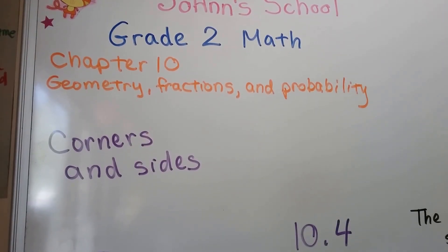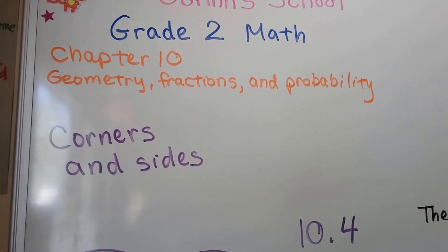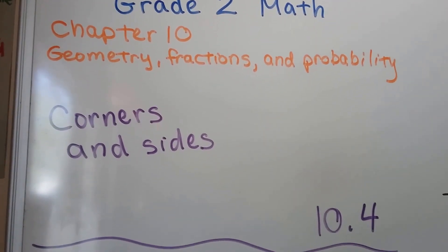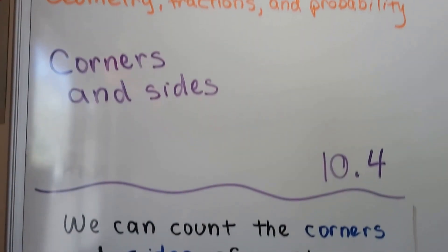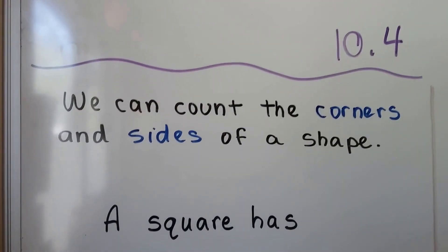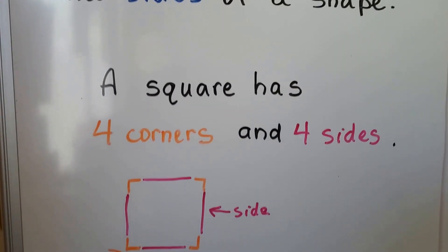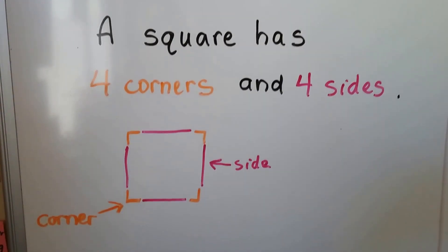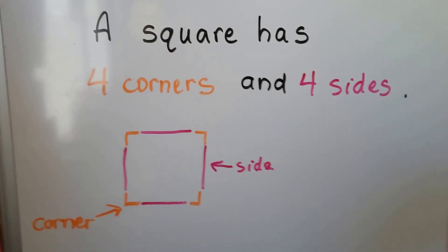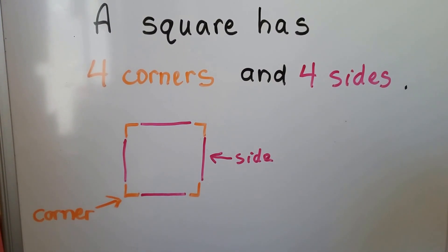We're going to talk about corners and sides of shapes. This is lesson 10.4. We can count the corners and sides of a shape. A square has four corners and four sides, and all the sides are the same length — they're the same size.